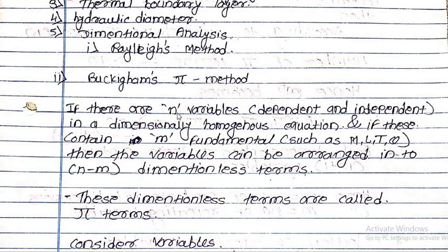According to this Buckingham Pi theorem statement, if there are n variables — both dependent and independent — then n represents the total count of all variables including dependent and independent variables. Dependent variables are those that depend on other variables, while independent variables do not depend on other variables.